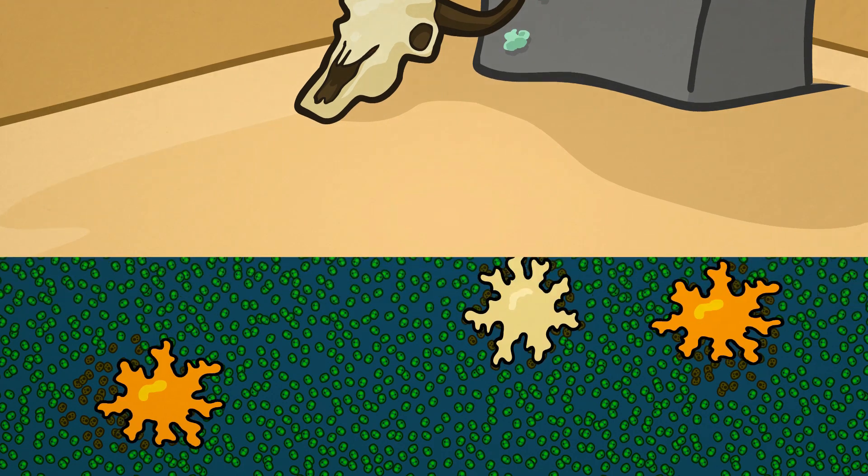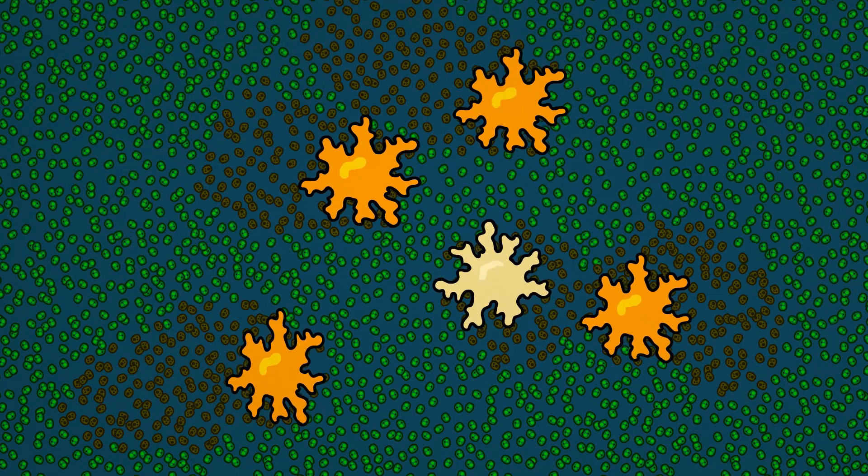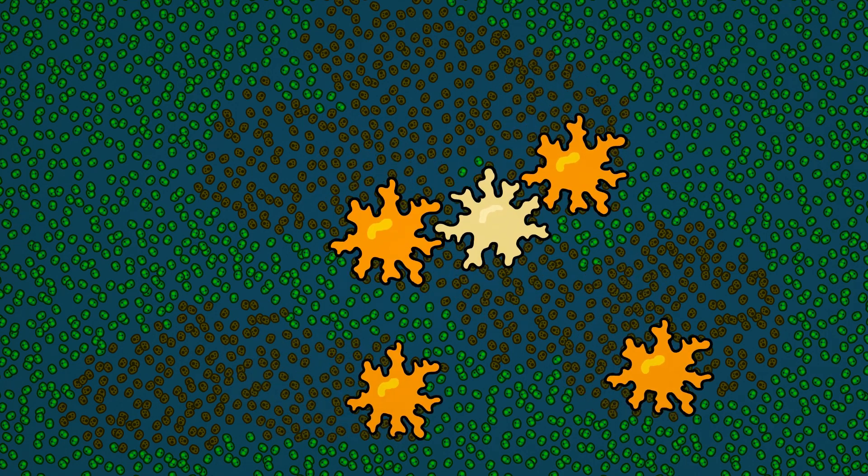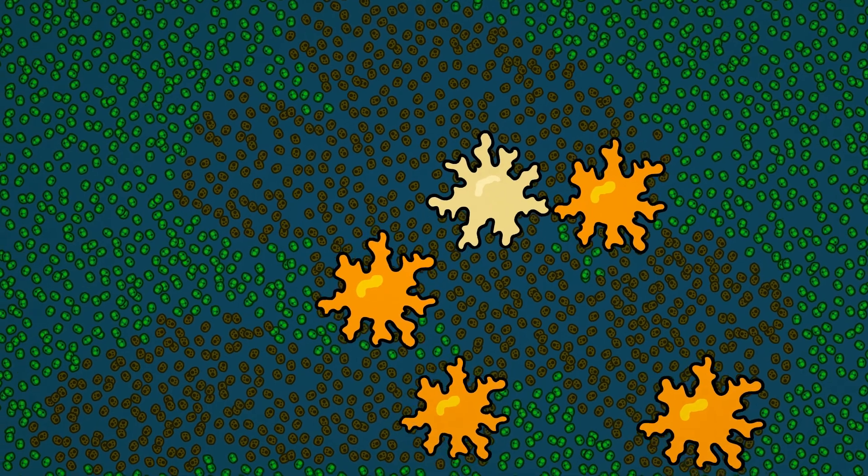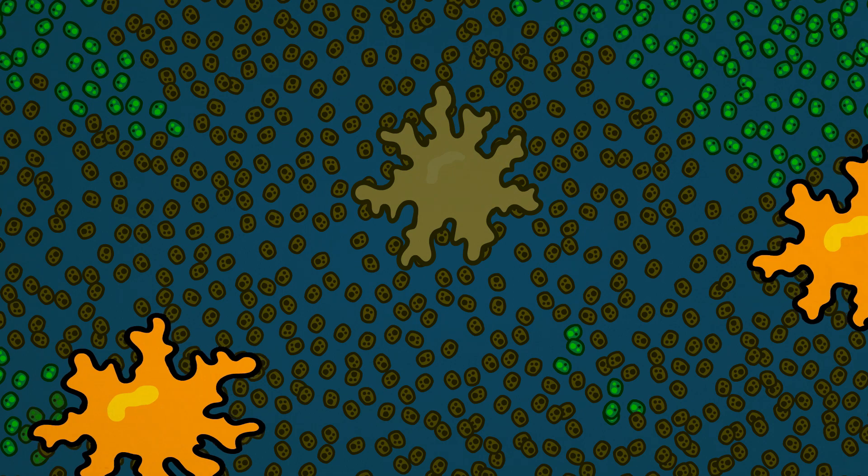This is a problem because if we imagine an environment with plenty of algae to eat, it seems that natural selection can only favor fungi with mutations that allow them to eat fast and multiply quickly. Slower, gentler fungi will always lose the competition, making it impossible for cooperation to evolve.